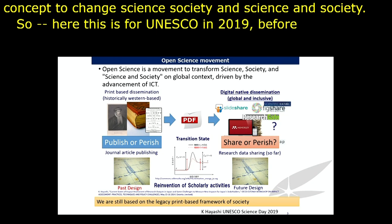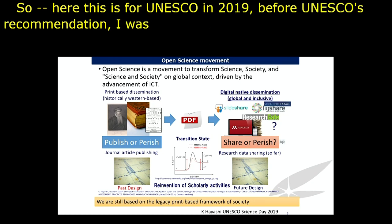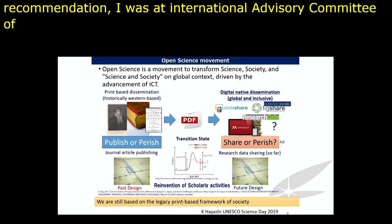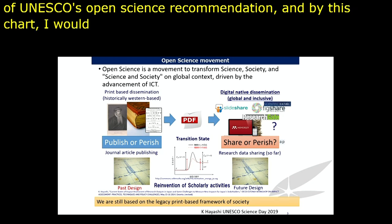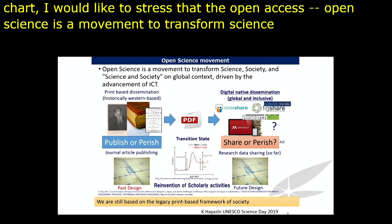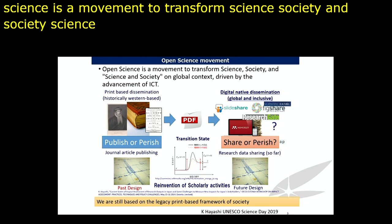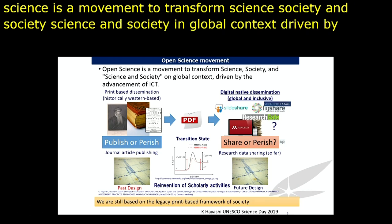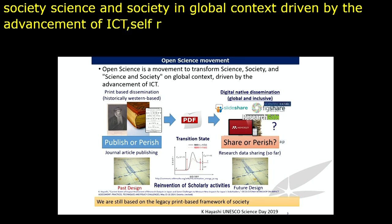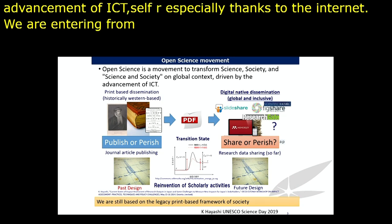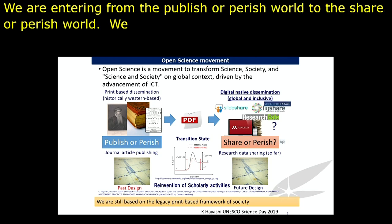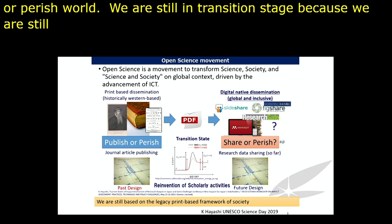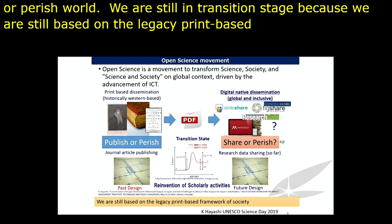This is my chart for the Cabinet Office in 2014 explaining what open science is. Open access is just access to the article. But open science is sharing the research output, allowing reuse, or opening the research activity itself — that's the beauty of open science. It includes previous initiatives of data sharing, open source, open innovation, and citizen science. Open science has a very inclusive concept to change science and society. We are entering from the 'publish or perish' world to the 'share or perish' world, and we are still in a transient state based on a legacy print-based framework.